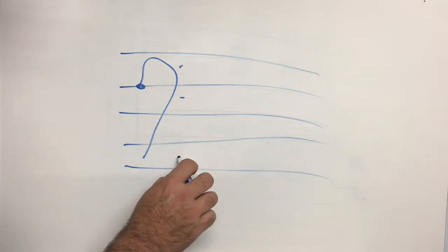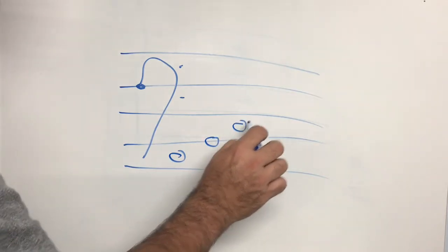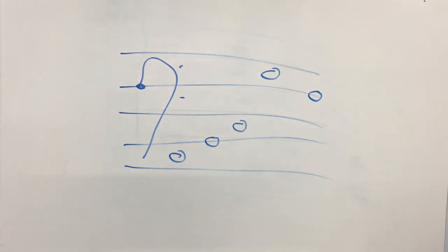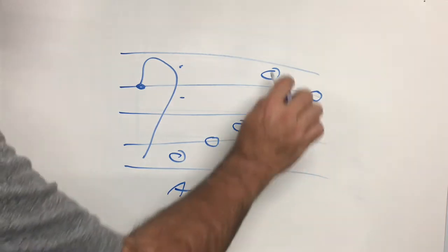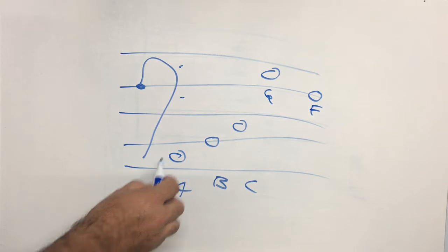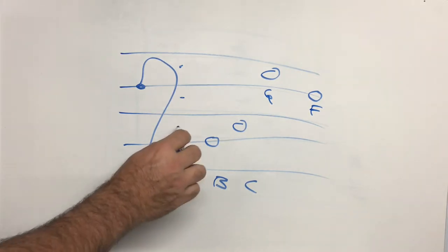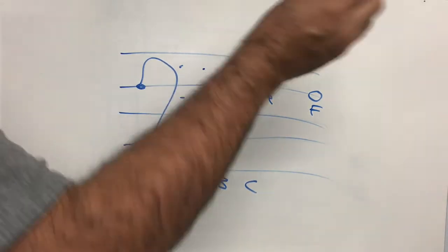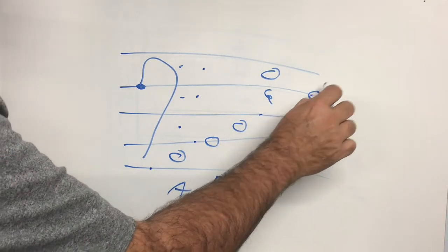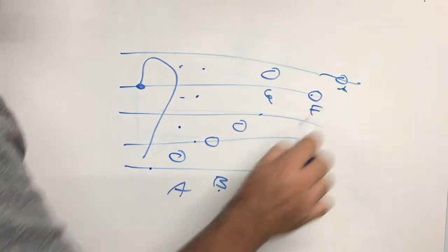Some notes. What are the letter names of the notes? A, B, C, G, F. Remember the spaces? All cows eat grass. A, C, E, G. And the lines, good boys deserve fruit. Top line would be A for always.